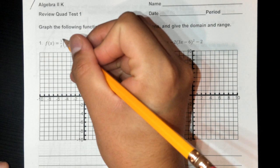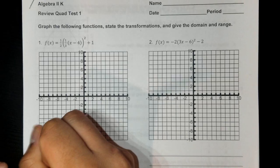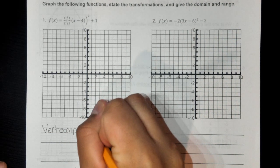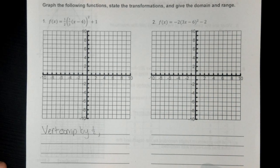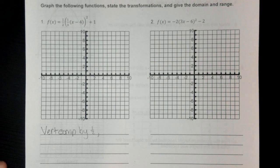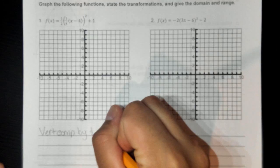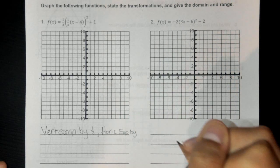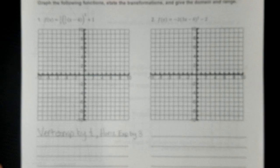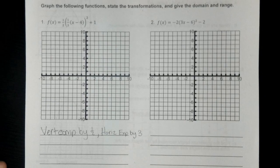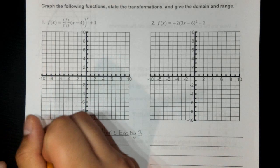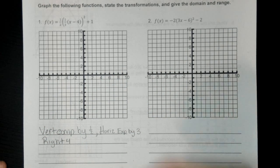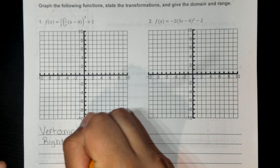For number one, let's get the transformations first. We have a one-half in the front — that's a vertical compression by half. We have one-third inside the parentheses squared, so that's a horizontal expansion by the reciprocal, which is 3. On the inside we have x minus 4, so that tells us to move right 4 units. And then we have a plus 1 on the outside, so this will shift up 1 unit.